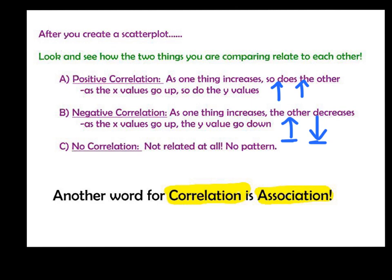The third type is called no correlation. That means the two things you're looking at — the two sets of data — they are not related at all. There's no pattern. An example of that might be your age and how many siblings you have. Those two data sets have no relationship at all. It doesn't matter your age; that has no impact on how many siblings you have. So that would be no relationship or no correlation.